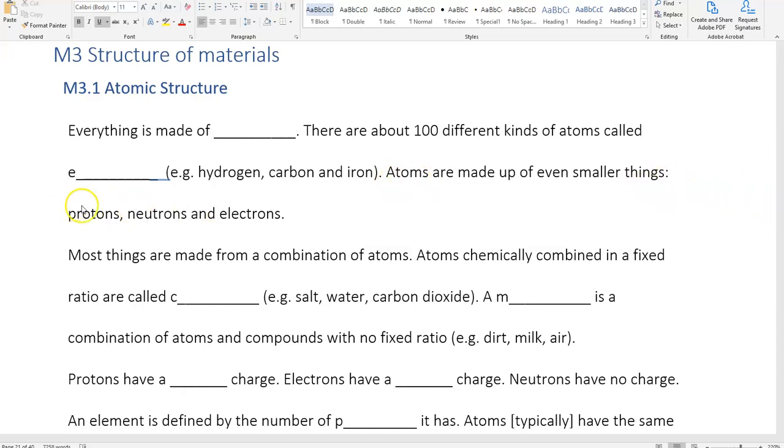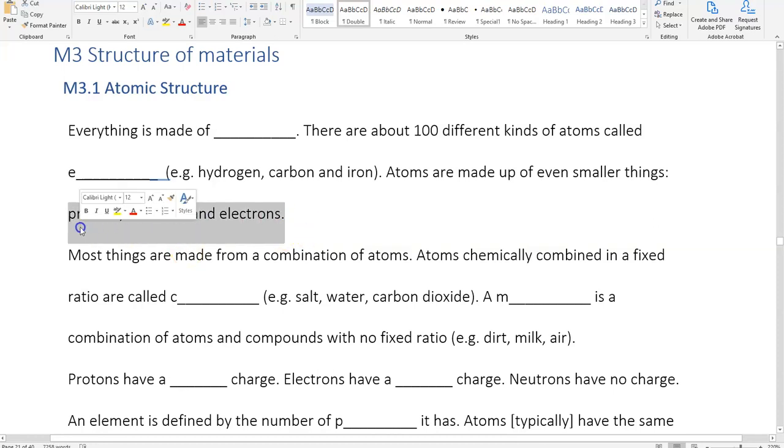Atoms are made up of even smaller things: protons, neutrons, and electrons. Technically, you could say that protons and neutrons are both made out of quarks, but for our purposes, for Year 11 engineering, we're happy with protons, neutrons, and electrons.